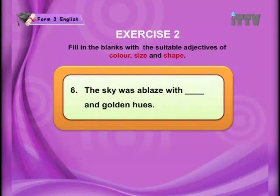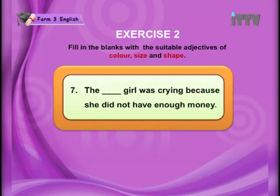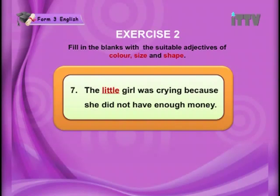Number six: The sky was ablaze with blank and golden hues. Answer: The sky was ablaze with red and golden hues. Now 'hues' means shades. Number seven: The blank girl was crying because she did not have enough money. Answer: The little girl was crying because she did not have enough money. The answer given here is 'little,' but there are situations where you can use different adjectives — keep that in mind.